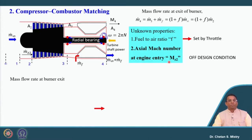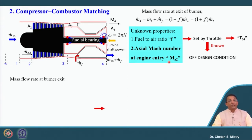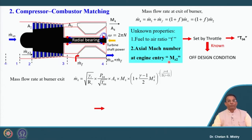This throttling process can be defined in terms of different off-design conditions. We have an important control parameter, which is T04 — the turbine entry temperature. T04 is a fixed number for a given condition. So, by setting the throttle we are able to set our fuel-to-air ratio.